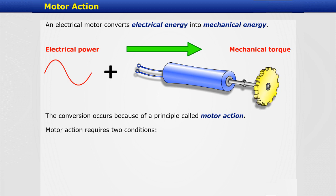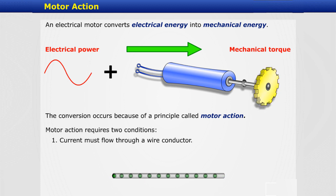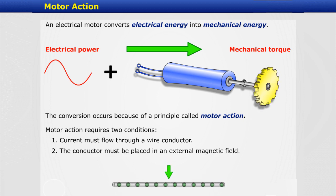Motor action requires two conditions. One, current must flow through a wire conductor. And two, the conductor must be placed in an external magnetic field.